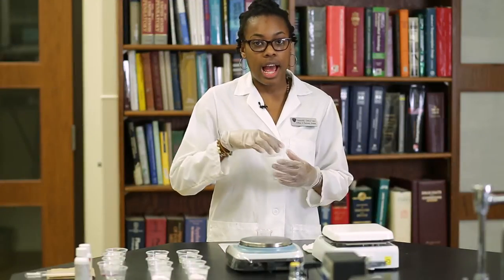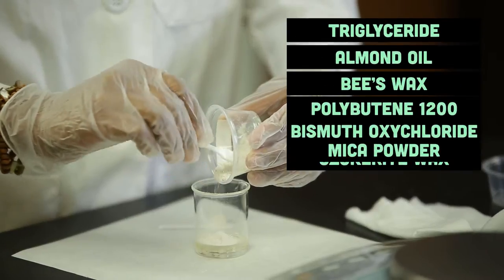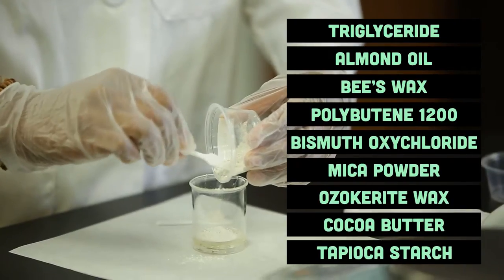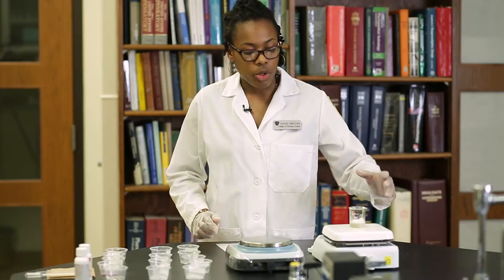To make cream eyeshadow first, we're going to add triglyceride. You need to heat it so that it becomes homogeneous.